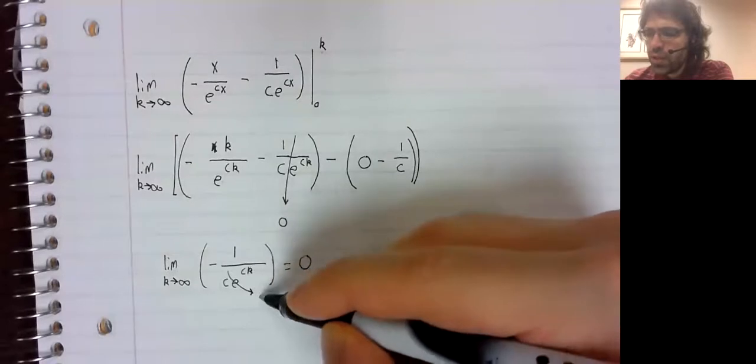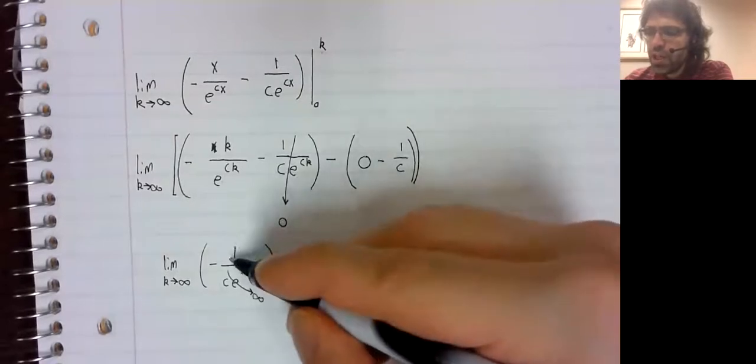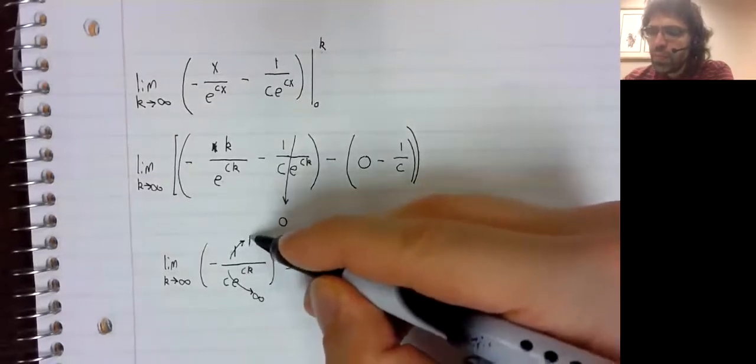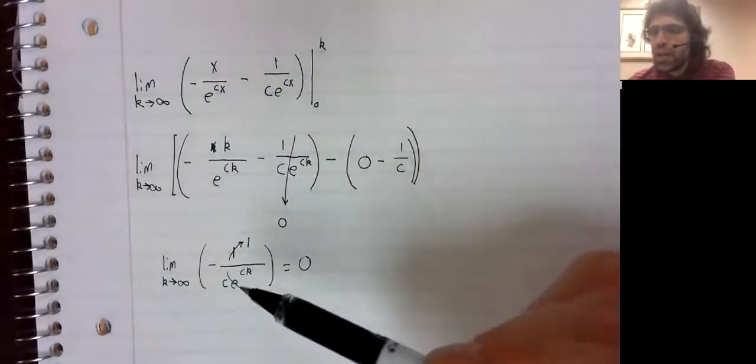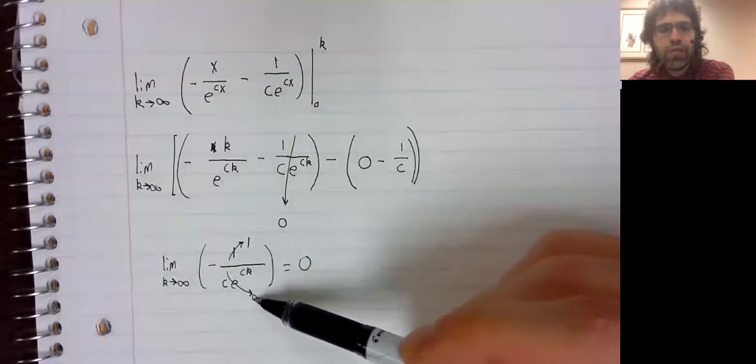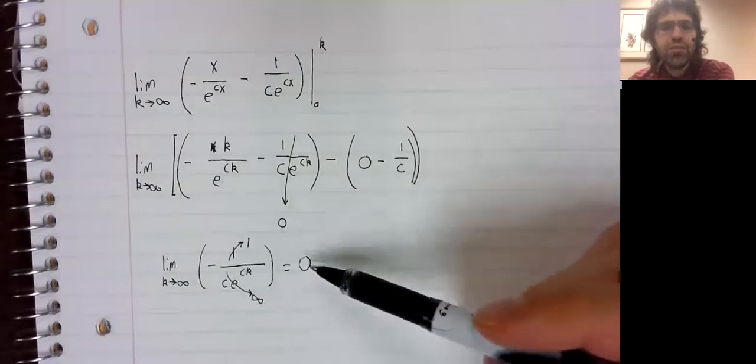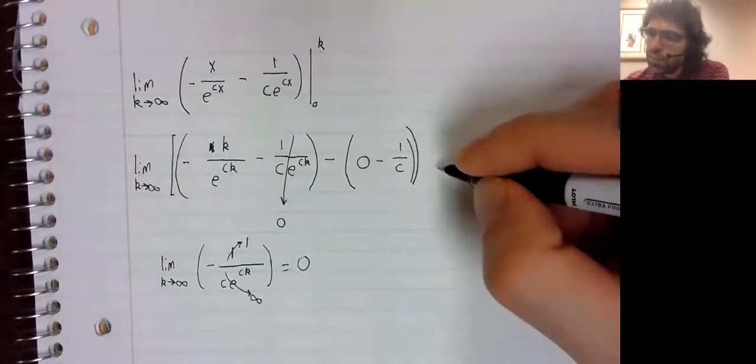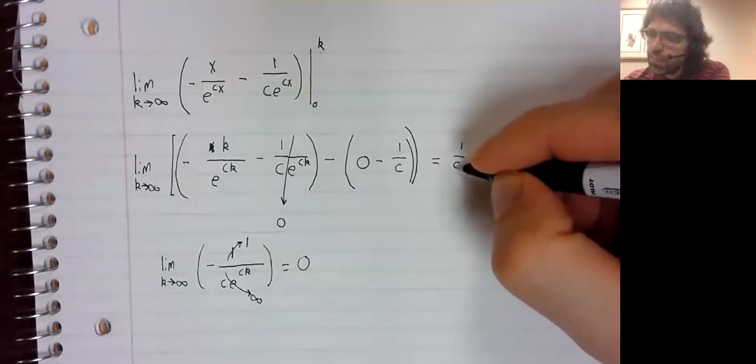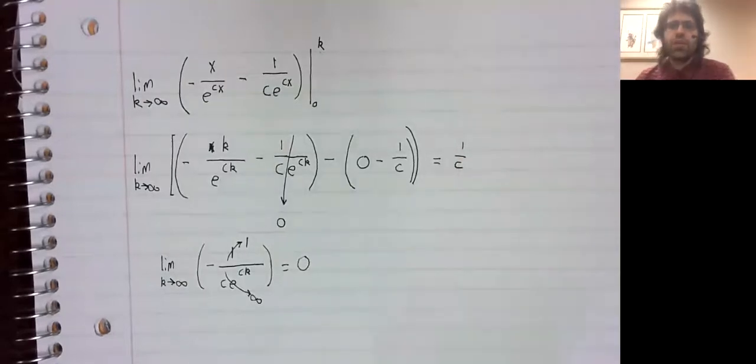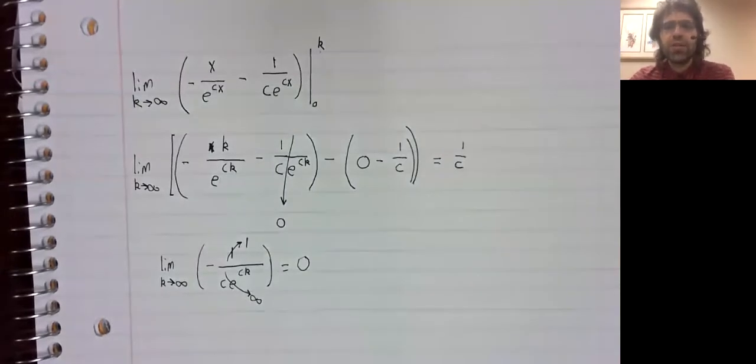And this limit is zero. The denominator is going to infinity. The numerator is going to one. A constant over infinity is zero. And we get that as our expected value.